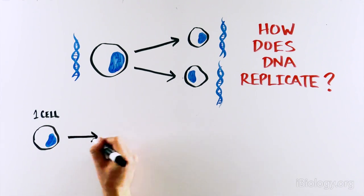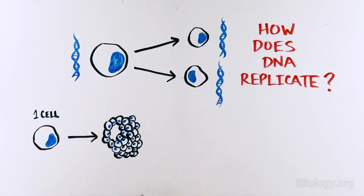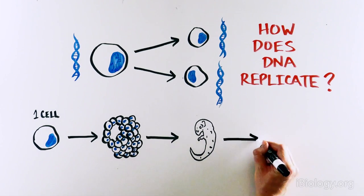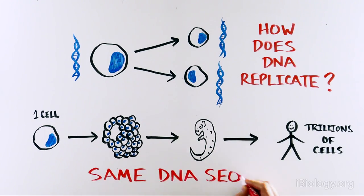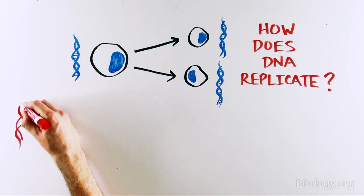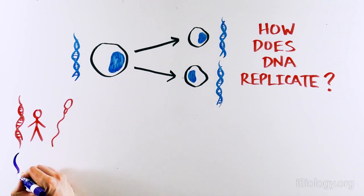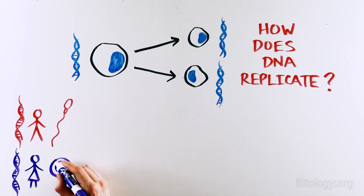This is a fundamental question that is the basis of life. We all come from a single cell that will produce an entire organism with trillions of cells that all have the exact same DNA sequence. And we are able to have children that share our DNA because their eggs and sperm carry our DNA sequence.